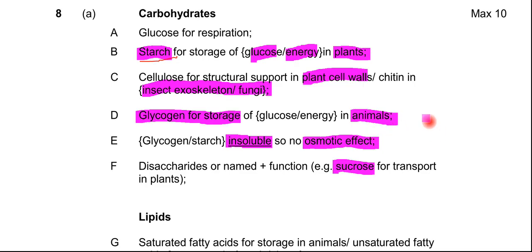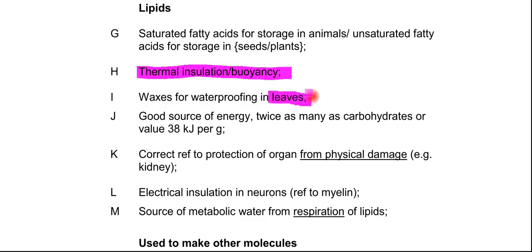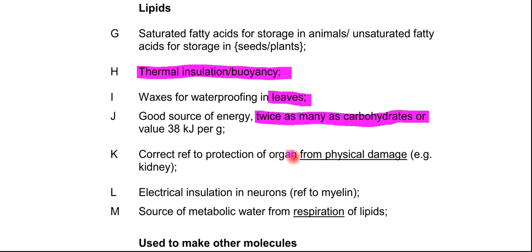Moving to lipids, there was a mark for saturated fatty acids as storage. Thermal insulation or buoyancy was one marking point — either one would gain credit. You can talk about waxes and waterproofing in leaves. There is a very good energy supply from fats, and you must mention the phrase 'twice as much energy released as carbohydrates.' Point K covers protection of organs from physical damage — if you just say 'protection,' the examiner will ask protection from what, so specify physical damage.